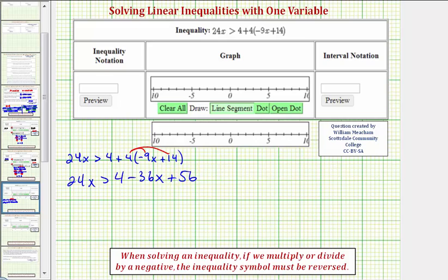Notice here on the right side we do have two like terms. Let's go ahead and combine them. Four plus 56 is equal to 60. So we have 24x is greater than 60 minus 36x.